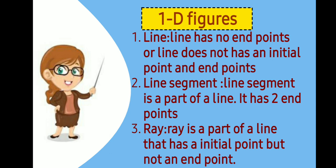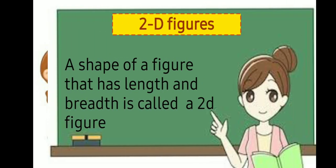Let us have some examples of 1D figures. The first one is a line — a line has no end points; it does not have any initial point or end point. The second one is a line segment, which is a part of a line and has two end points. The third one is a ray — a ray is a part of a line that has an initial point but not an end point.